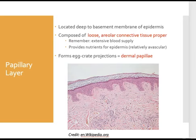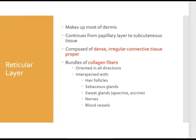The dermis contains two distinct layers: the papillary layer, which is closest to the epidermis, and the reticular layer, which is the wider layer of the dermis. It's in the reticular layer where we find dense irregular connective tissue proper and all of the accessory structures we associate with the integument: hair follicles, sebaceous glands, sweat glands, nerve endings, and blood vessels.